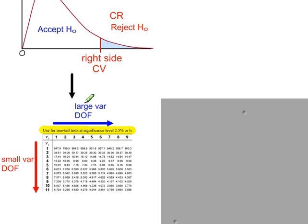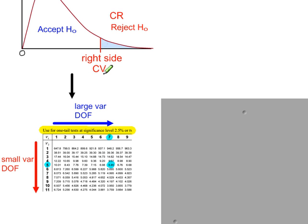For the sample that had the large variance — say it had eight values in the sample — so eight minus one gives us seven degrees of freedom. And for the sample that had the smaller variance — say it had six values — so six minus one gives five degrees of freedom. Where the two meet in the table will be our right-hand side critical value.